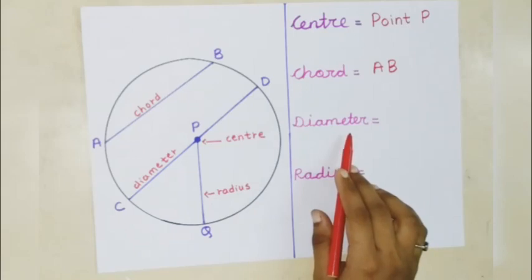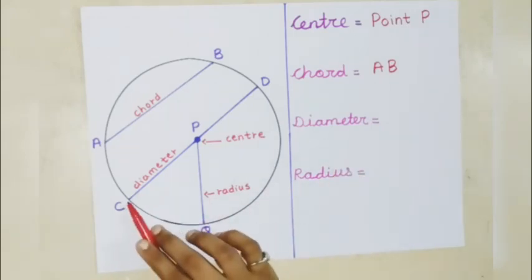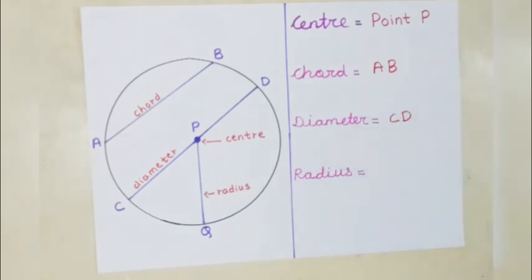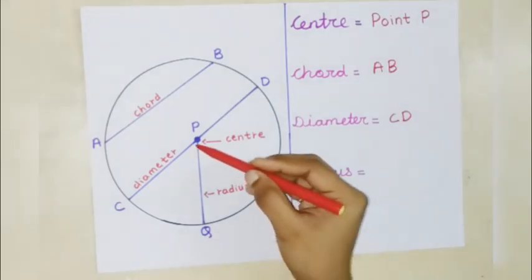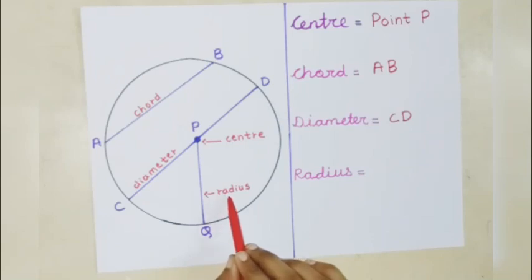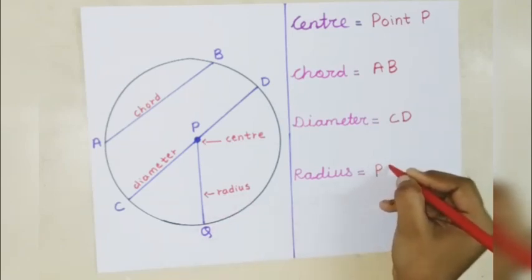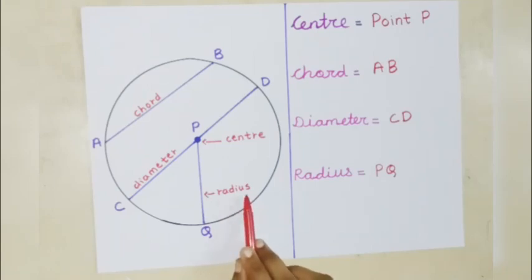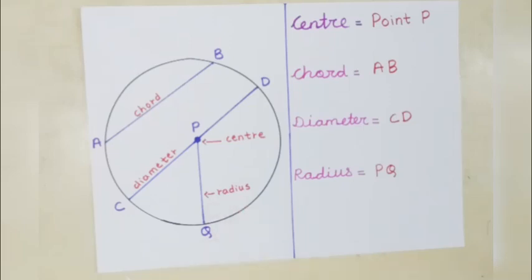In one figure, there can be many radii, diameters, and chords. The plural for radius is radii. This is the singular, and the plural for radius is radii.